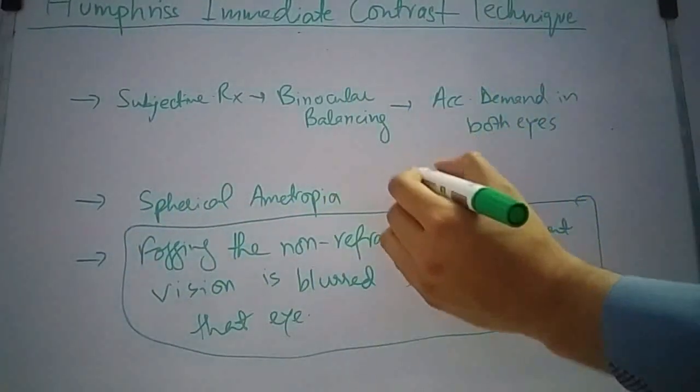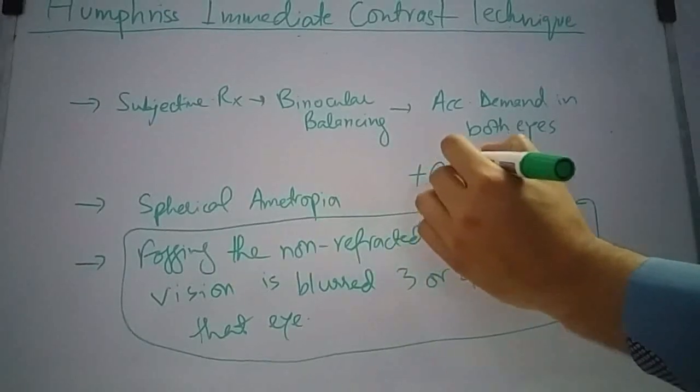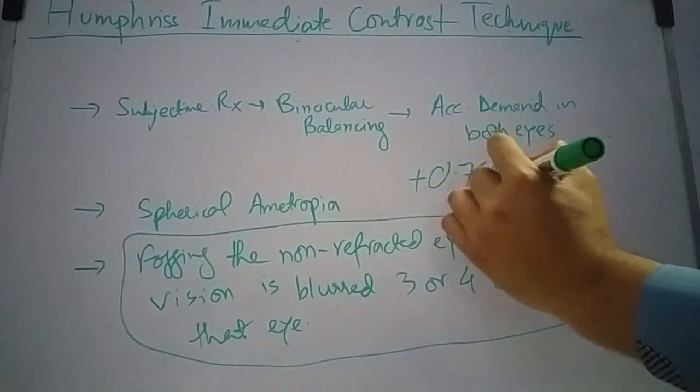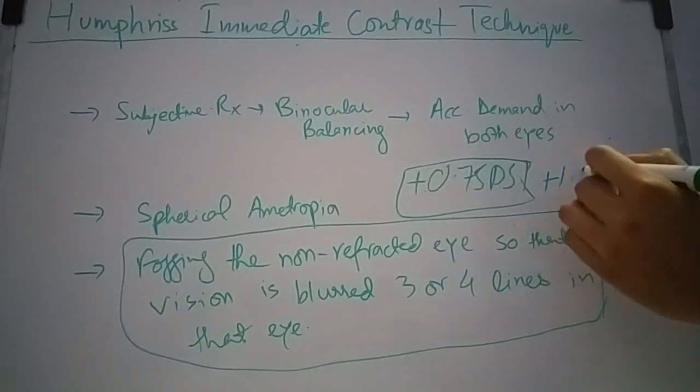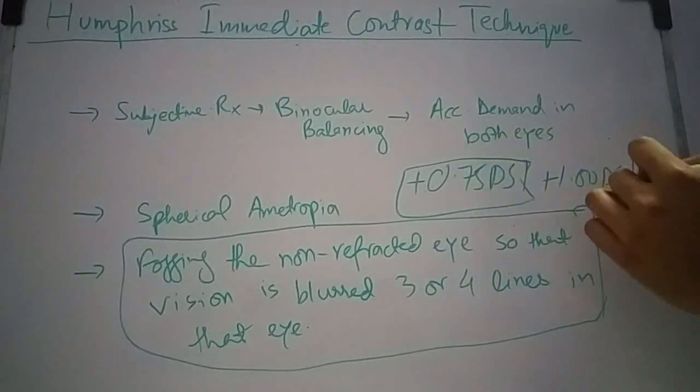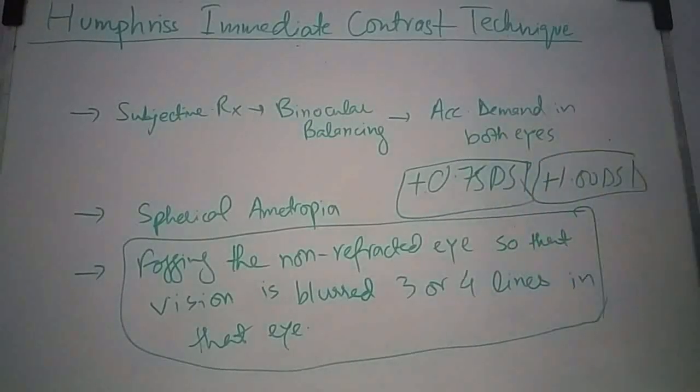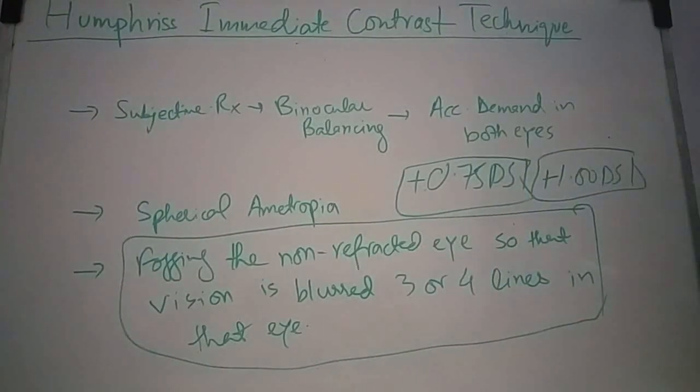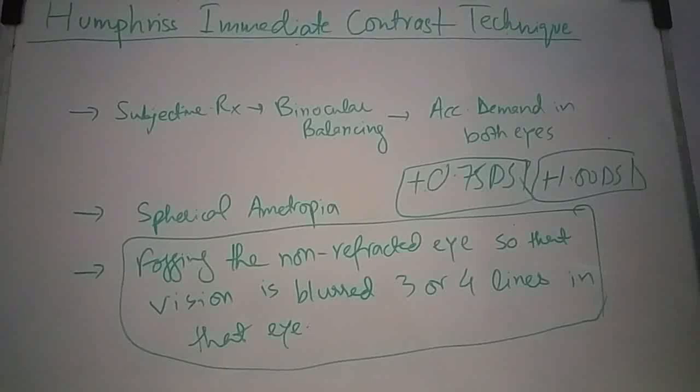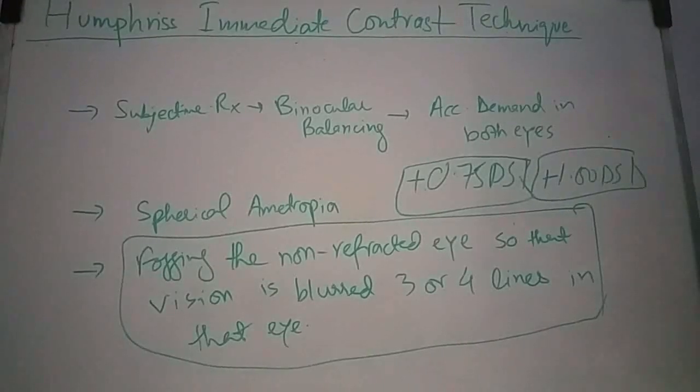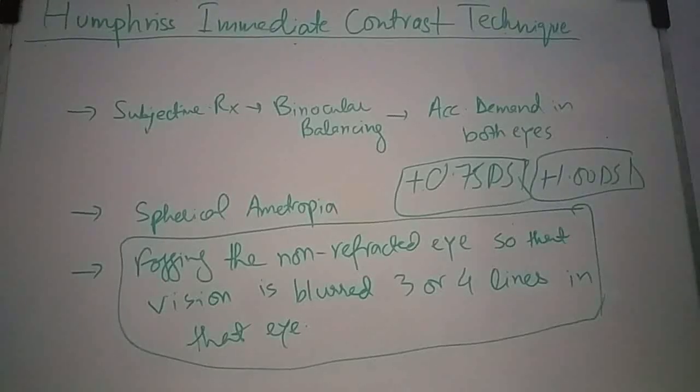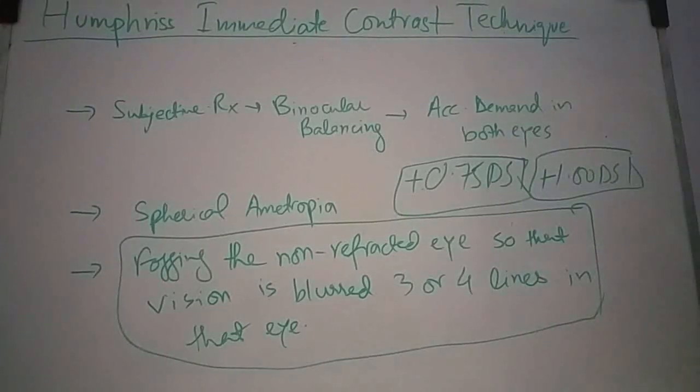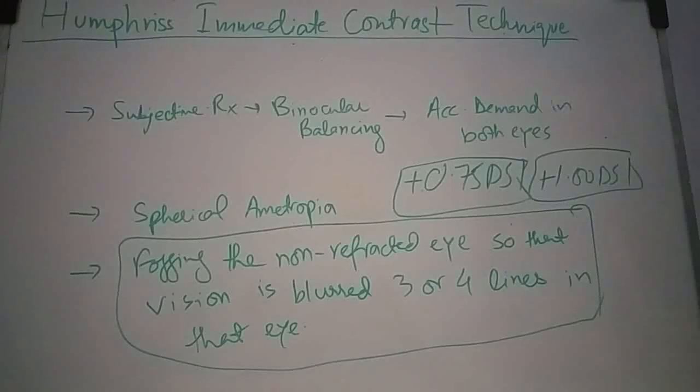Humphrey's suggested the occluding lens to be plus 0.75 diopter sphere, but most practitioners use plus 1 diopter sphere. This varies according to the age of the patient and size of the pupil. With smaller pupils, more plus is required to blur 3 or 4 lines, and with larger pupils, less plus is required.